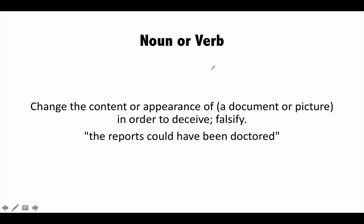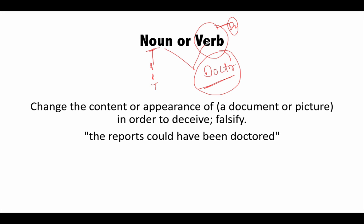But before I start, is the word 'doctor' a verb or a noun? Nouns are persons, places or things, and verbs denote an action. Verbs can be transitive or intransitive. The word 'doctor' is actually both — it is a noun because a doctor is a person, and it can also be used as a verb. As a noun it's quite understood, but as a verb, not so much. Look at this sentence.